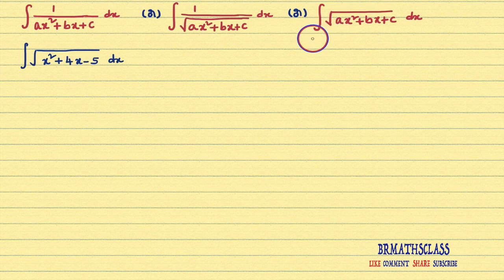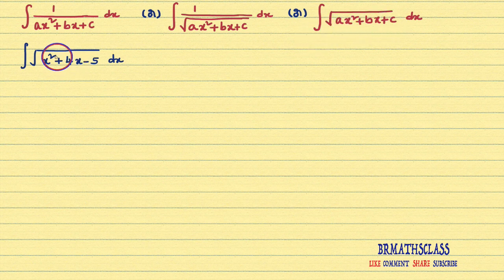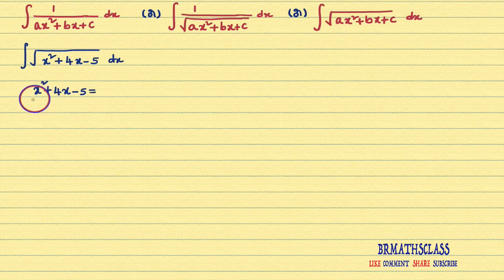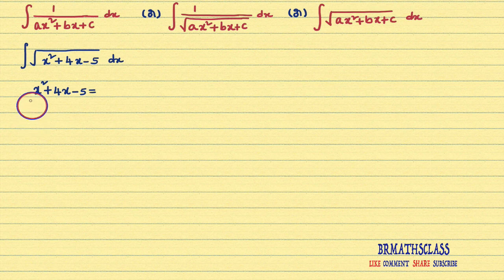What is that procedure? First, we consider the expression which is in the form of ax² plus bx plus c. Here, that expression is x² plus 4x minus 5. After considering the expression x² plus 4x minus 5, you check that the x² coefficient is 1 or not. In this problem, the x² coefficient is 1 only.